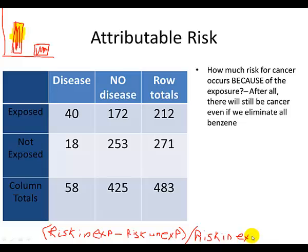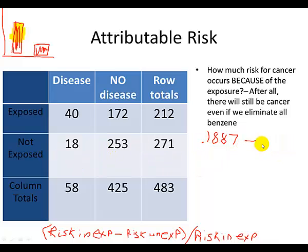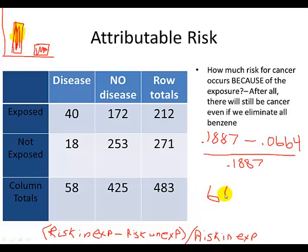We take our 2x2 table from the previous word problem. We had 40 people who had cancer in the benzene-exposed group and 18 that had cancer who were not exposed. Plugging these into the calculation: 40 divided by 212 gives 18.87%, the risk in the unexposed group was 6.64%, and dividing the difference by 0.1887 gives a total of 64.81%.